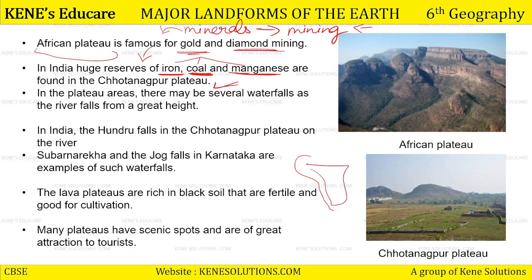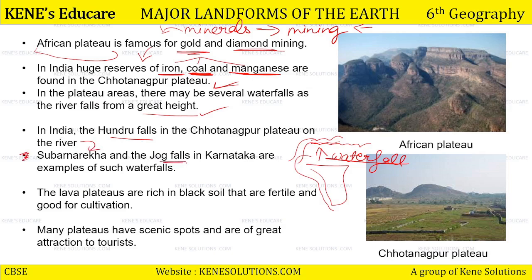In the plateau areas, there may be several waterfalls as the river falls from a great height. Generally plateau region ke paas aise hota hai kyunki flat land hoti hai aur thodi height pe bhi hoti hai — isliye agar koi river wahan se flow karti hui aa rahi hai aur jab voh neeche girte hai toh ek waterfall bana deti hai. India mein Hundru Falls hain Chota Nagpur Plateau mein, aur river Subarnarekha se fall karte hain. Jog Falls jo ki Karnataka mein hain — yeh aise waterfalls hain jo plateau region se fall karte hain.